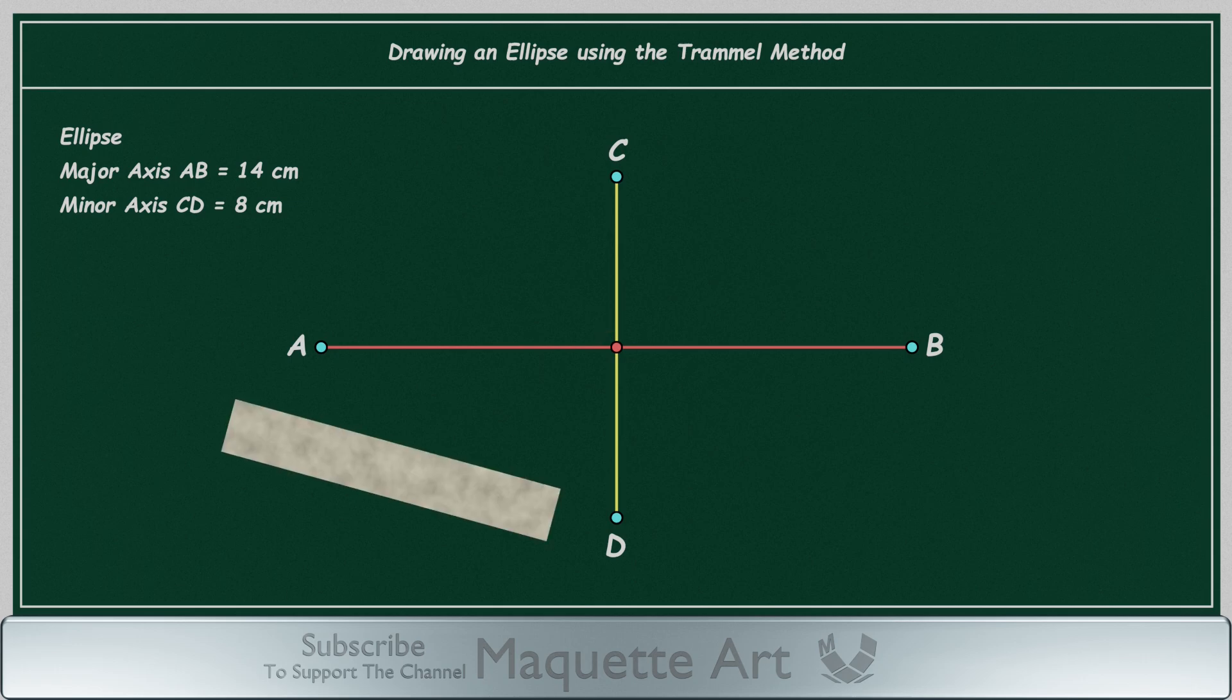Now we need a piece of paper like this to use as the trammel. The length of the paper must be greater than half the length of line AB.